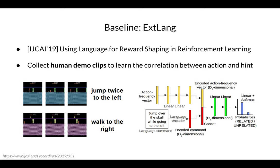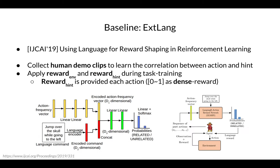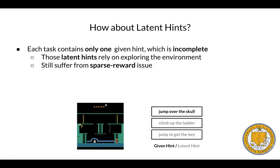The baseline first collects human demo clips with instructions to learn the correlation between actions and hints. The correlation is a relevance score between action frequency and language commands. Then during each task training, there are two kinds of reward: one is from the environment, which is sparse and represents the achievement signal; the second is provided by the hint, which is dense for each action step and is a scalar between 0 and 1. However, they miss something important — since each task contains only one given hint, it might be incomplete. The unmentioned latent hints rely on exploration in the environment and still suffer from the sparse reward issue.